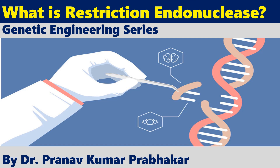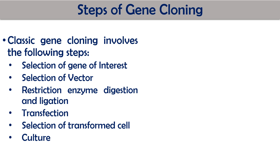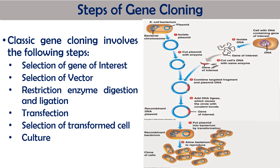If you are not subscribed to my channel you can subscribe it, press the like button, and press the bell button so that you will get all the notifications on time. So let's start. If you see the gene cloning steps, there are seven important steps: selection of gene of interest, selection of vector, restriction enzyme digestion, loading of gene of interest onto the vector, and then ligation.